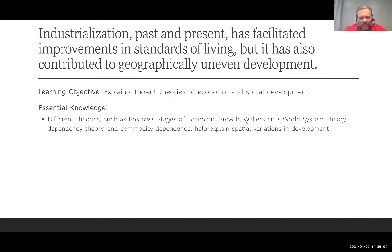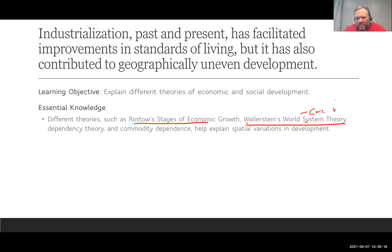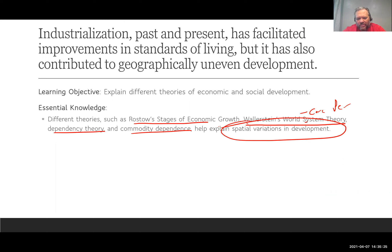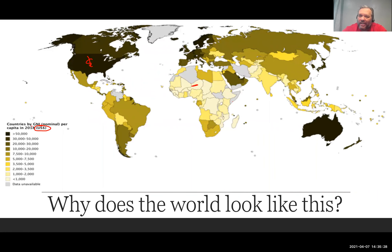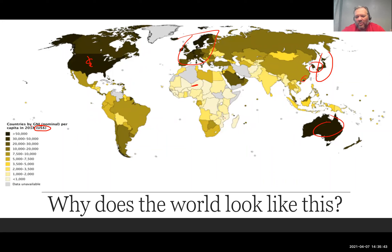There are going to be four different theories you need to know. One is Rostow's stages of economic growth or development. Wallerstein's world system theory — we've mentioned this before; this is the core-periphery stuff. Dependency theory and commodity dependence. These are hopefully going to help explain the spatial variations in development. Spatial just means why are things where they are on a map — why is there so much wealth in certain places and so little in others?